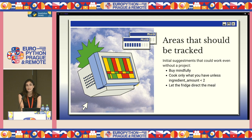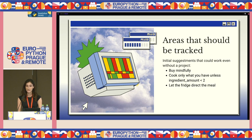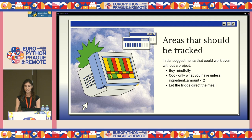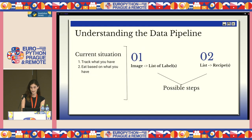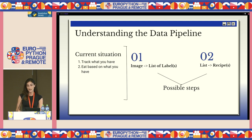The areas we should be tracking: deciding to buy mindfully, tracking what I have in my fridge by building a fridge detection project. There are smart fridges that already do this but they're very expensive for no reason. A second part would recommend what to eat based on the ingredient list, handling edge cases where ingredient amounts matter. Understanding the data pipeline means knowing your input and output first.